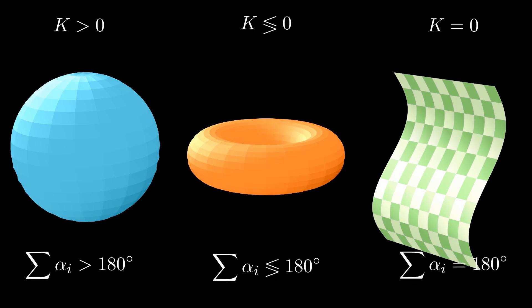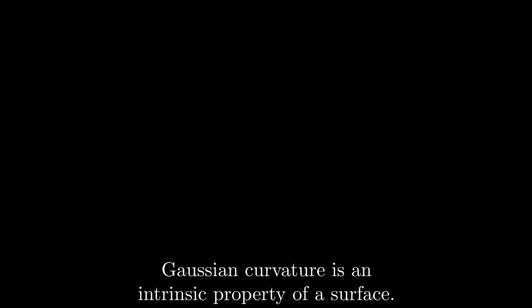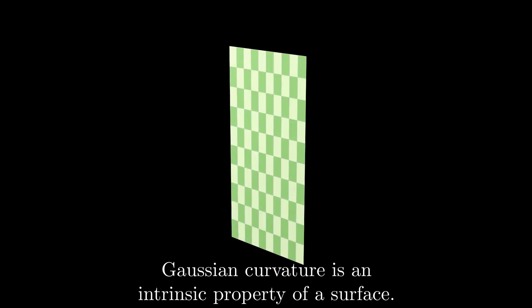This relationship is captured by a key formula. When we integrate the Gaussian curvature over a triangular region, we obtain the amount by which the sum of its angles deviates from 180 degrees. Another important property of Gaussian curvature is that it is an intrinsic property of the surface. We saw earlier that no measurement of angles or distances could reveal the curvature of the bent paper. From an intrinsic perspective, it behaves exactly like a flat surface. This is confirmed by the fact that its Gaussian curvature is 0 everywhere.